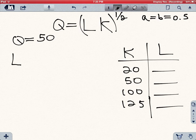So you have L is going to be equal to Q divided by K, which is raised to the 1 half, and all of this is going to be raised to 1 over 1 half, if you want to simplify this equation for L.